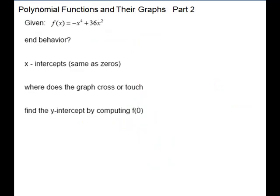Let's look at this function and answer the questions. First question is about the end behavior. This is a fourth degree, so it is even. It has a negative leading coefficient. So it is going to look like an upside down M. Next we want to find the zeros. We're going to factor, set it equal to zero and factor.